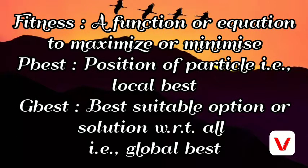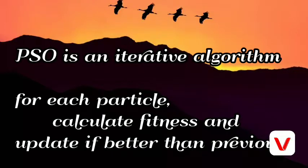In the PSO algorithm, we need to calculate fitness, which is a function or equation to maximize or minimize. PBEST is the position of the particle that is the local best, and GBEST is the best suitable option or solution with respect to all — that is the global best.